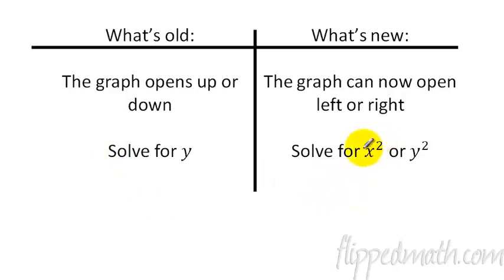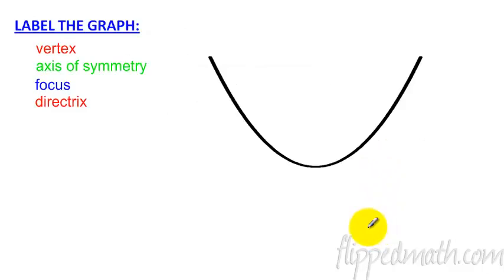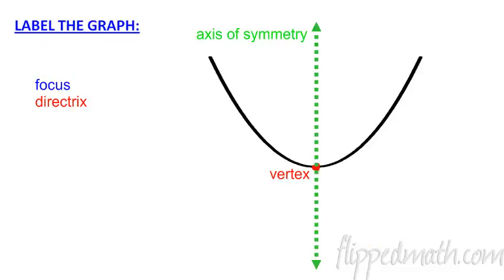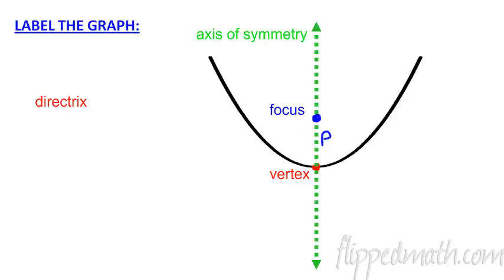We're solving for the quantity squared in this case, not solving for y. So let's label a little graph here. Vertex - that's easy, right there. Axis of symmetry - that's easy too. Now let's do some stuff that's new - and that is a focus. The focus just goes anywhere inside the parabola there. The distance from the vertex to the focus, we call that a distance of the letter p. So that's important for our formula - that distance is p.